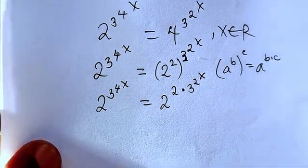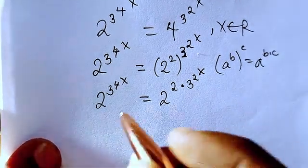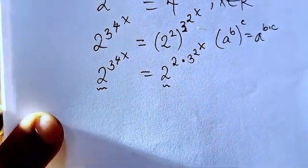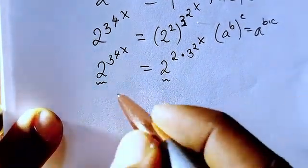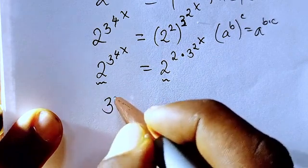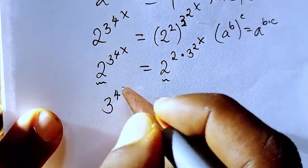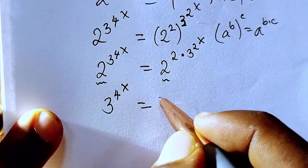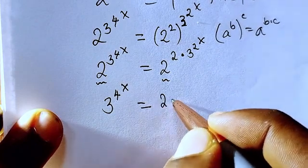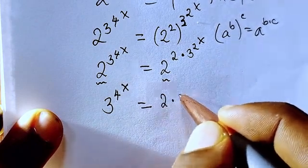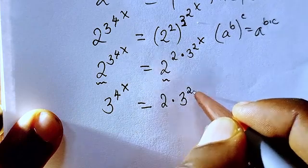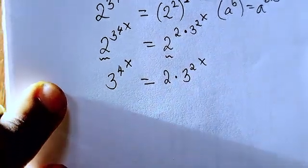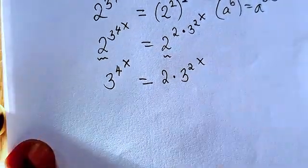Since we have the same base on both sides, we equate the exponents. We get: 3 to the power of 4 to the power of x equals 2 multiplied by 3 to the power of 2 to the power of x.